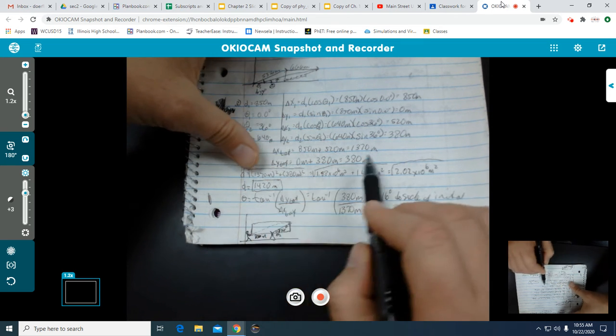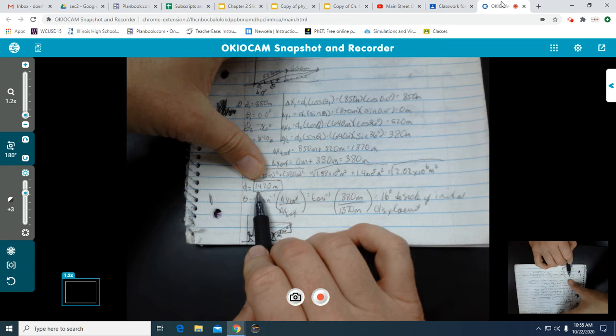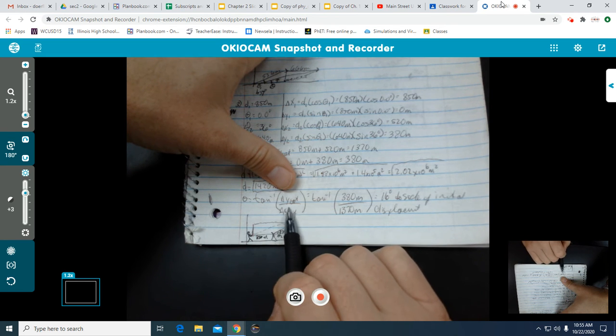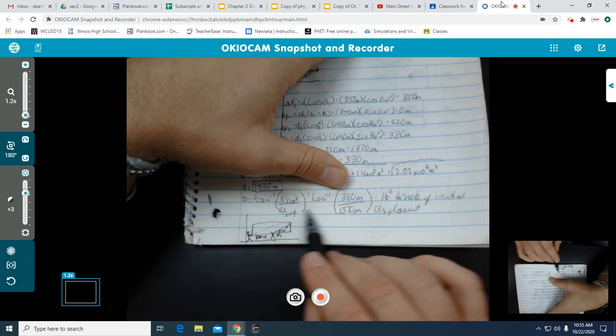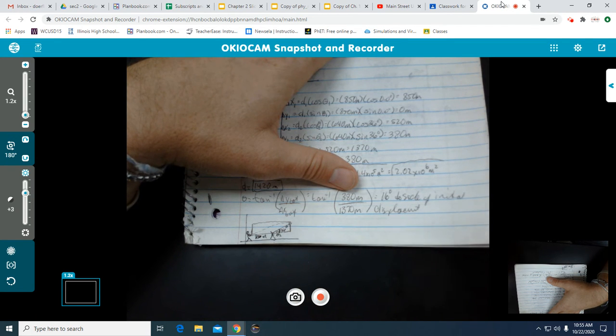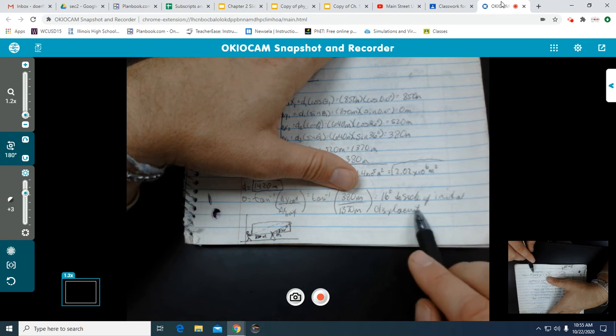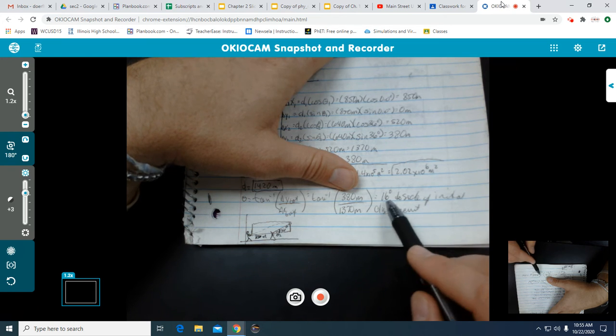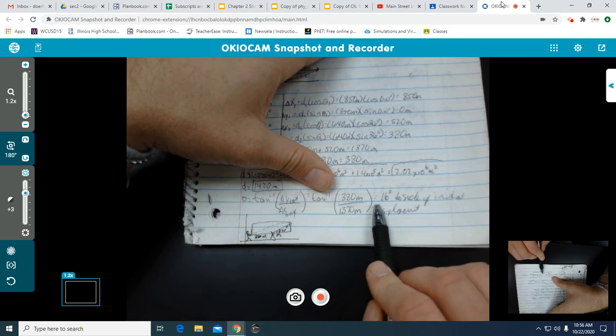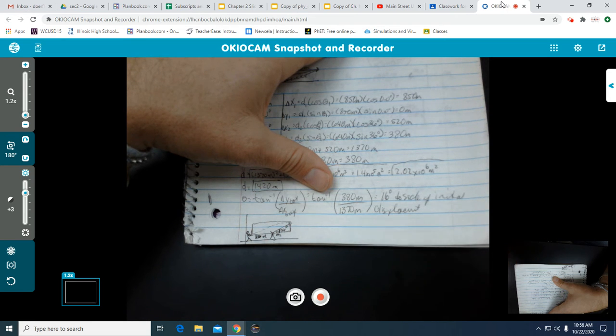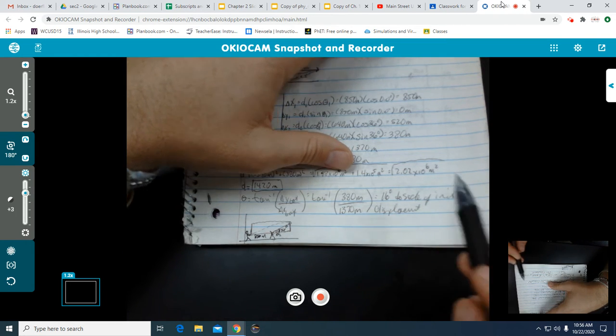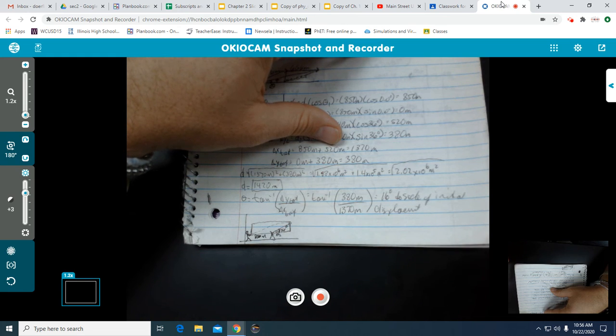Go ahead and sum up the x, sum up the y, put those into the Pythagorean theorem. You find that the total displacement of the bullet from the original starting location is 1,420 meters. You might have a little bit of rounding going on. And again, inverse tangent. This is an interesting one. Inverse tangent, y over x, you'll get 16 degrees. And the wording is weird. If you can come up with something better, by all means, to the side of the initial displacement. Or if you did x over y, you should have 74 degrees.